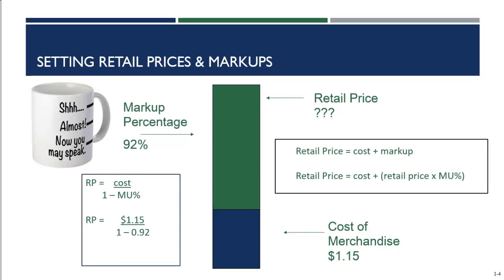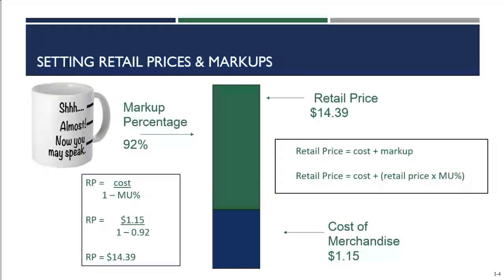Taking the numbers we have: our mug costs a dollar fifteen from the vendor, and our markup percentage is ninety-two percent. So we take one minus point nine two, and divide the cost by that result. The retail price comes out to fourteen dollars and thirty-nine cents — that's the price you'd need to set in order to cover all of your expenses at your gift and souvenir shop.